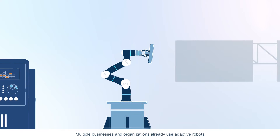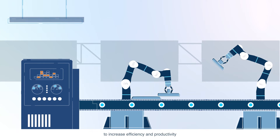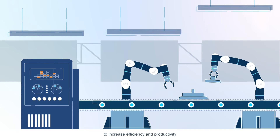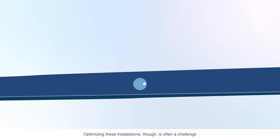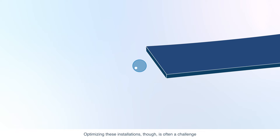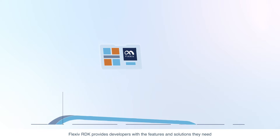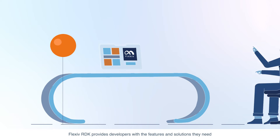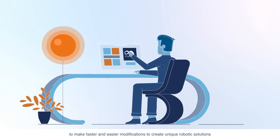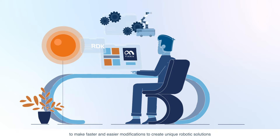Multiple businesses and organizations already use adaptive robots to increase efficiency and productivity. Optimizing these installations, though, is often a challenge. Flexiv RDK provides developers with the features and solutions they need to make faster and easier modifications to create unique robotic solutions.